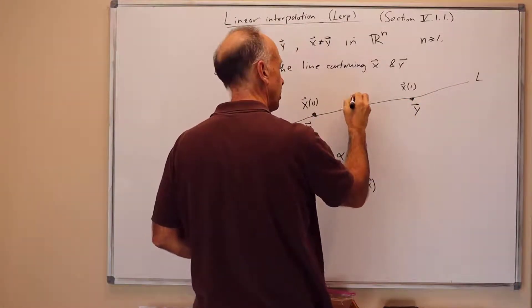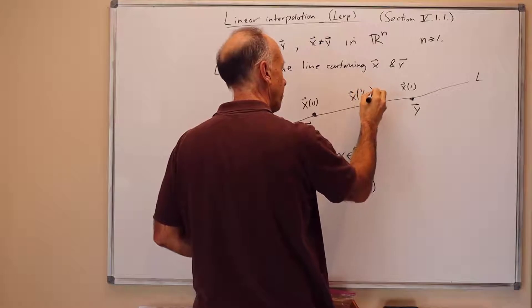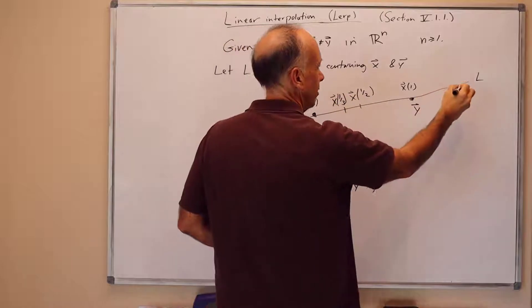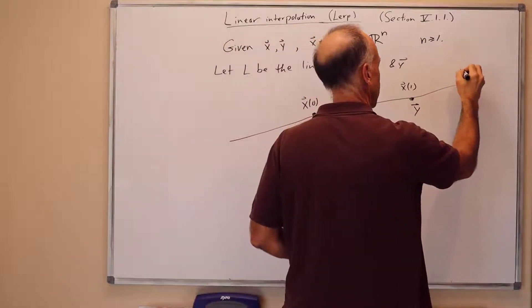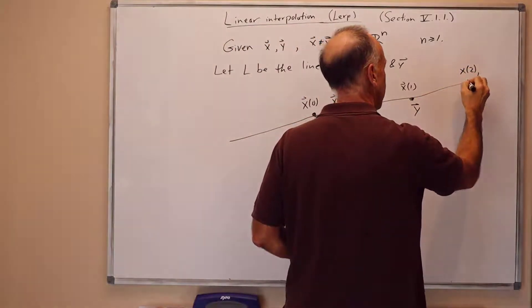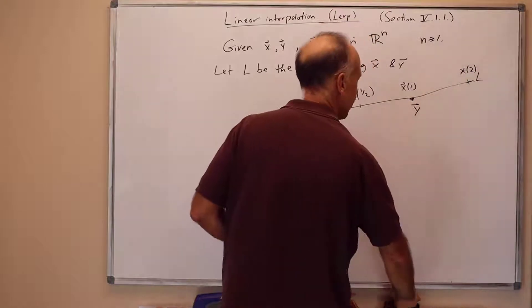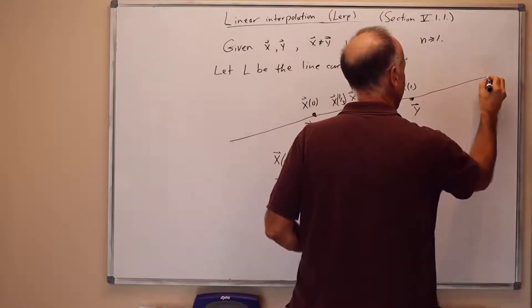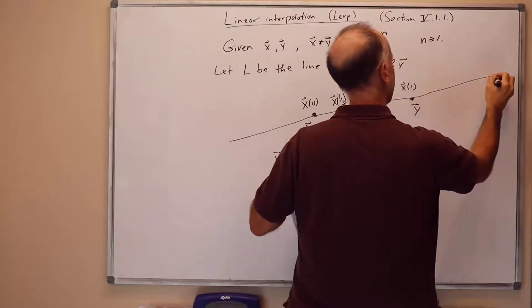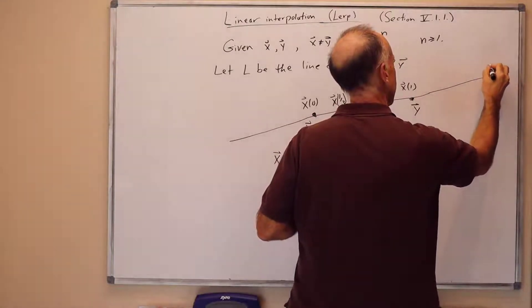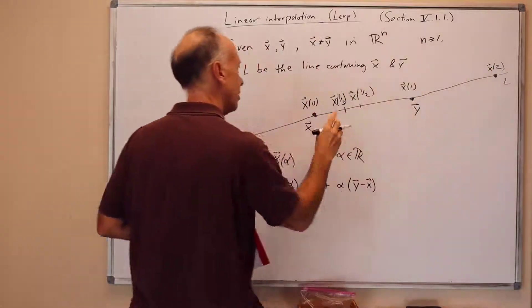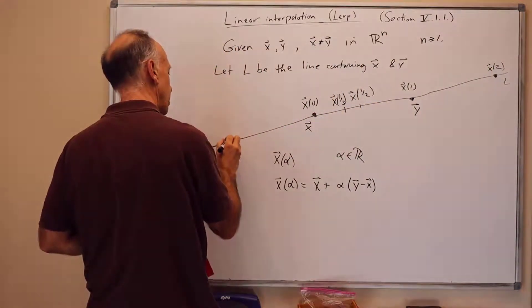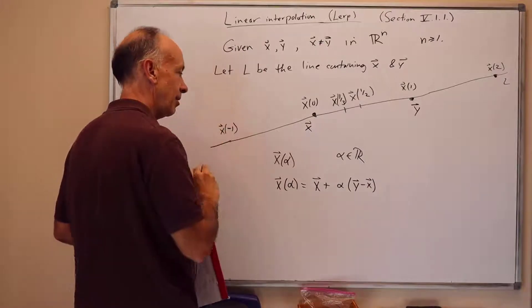So here, for instance, would be x of 1 half. Here would be x of 1 third. Here would be approximately x of 2. This distance is supposed to be the same as the earlier distance. Let's draw that a little more to scale. And x of minus 1, we go this distance back this way.